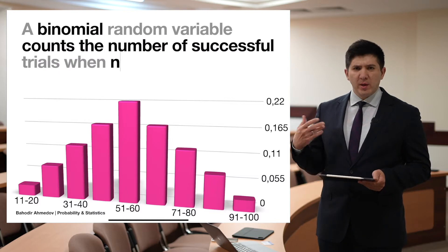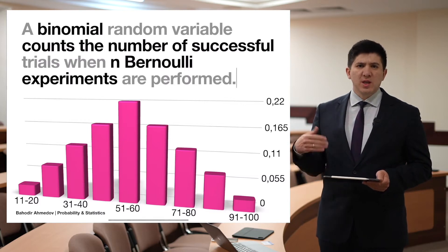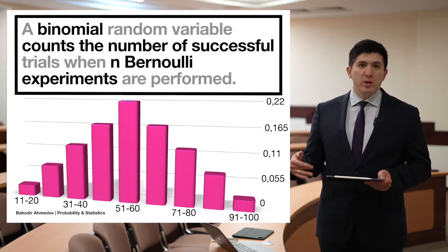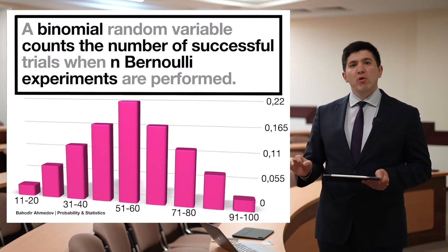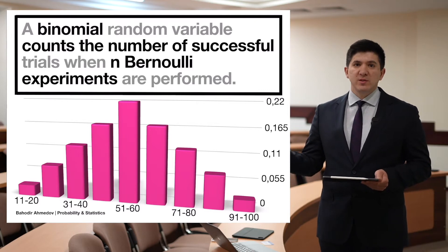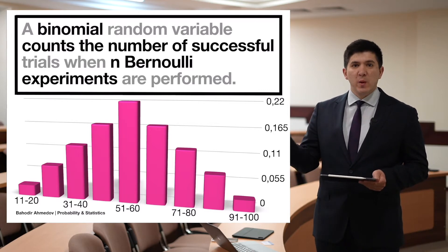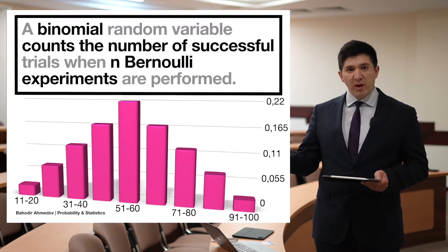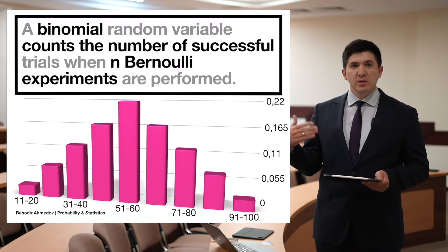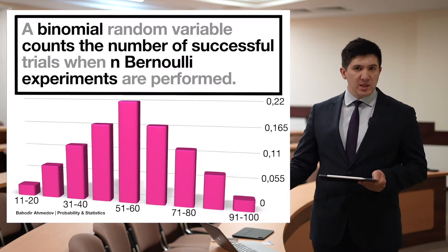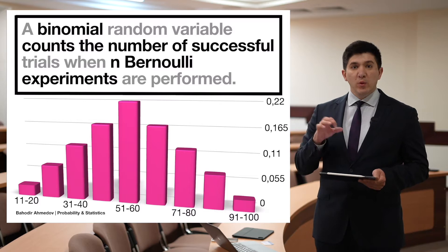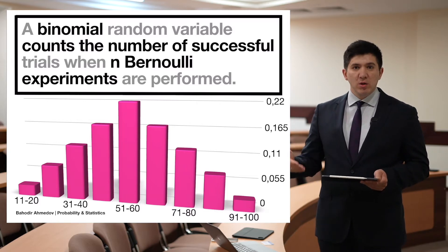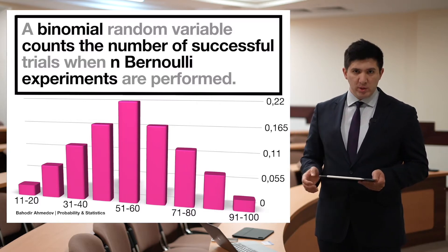The binomial distribution counts the number of successful trials when you perform n Bernoulli experiments — essentially n experiments with only two outputs, success or failure. You would like to know how many of them are going to be successful, which is the random variable whose distribution is called the binomial distribution.